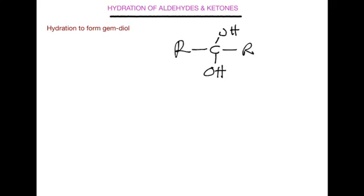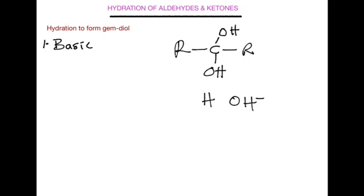These germinal diols are not really stable hydrates. Water will add rapidly across the carbonyl group of aldehydes and ketones, with hydrogen and hydroxide ion adding across the carbonyl pi bond. This reaction takes place under two main conditions: the basic medium and the acidic medium.